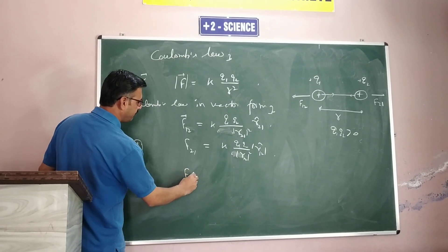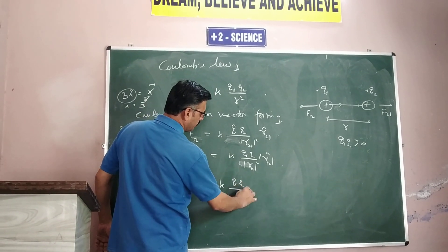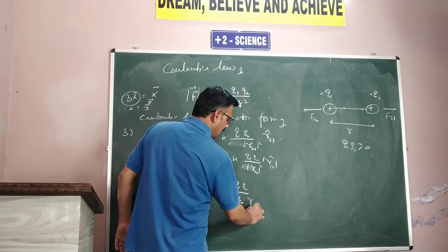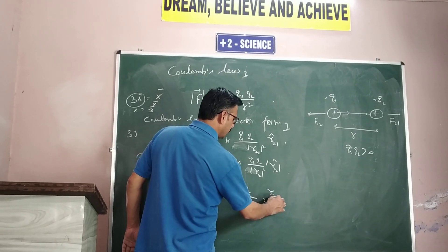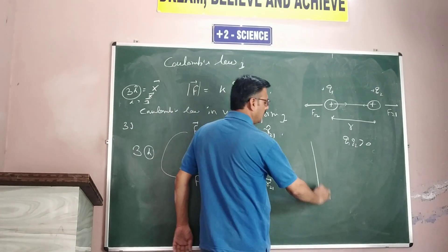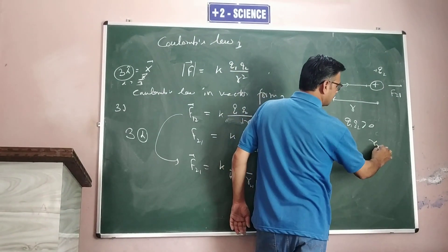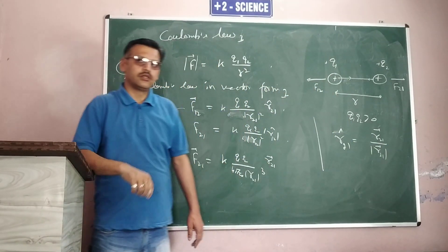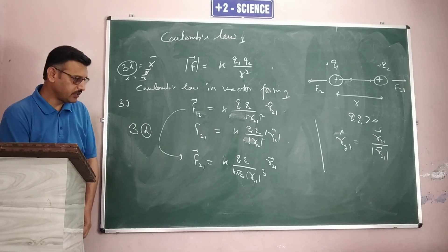F12 can be written as K times Q1 times Q2 divided by R21 cubed, multiplied by vector R21. This is because the unit vector R21 equals the vector R21 divided by its magnitude. Therefore, using the given vector divided by its magnitude, we arrive at the complete vector form of Coulomb's law.